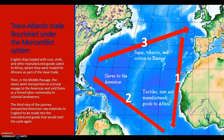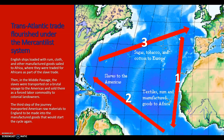Transatlantic trade flourished under the mercantilist system. English ships loaded with rum, cloth, and other manufactured goods sailed to Africa where they were traded for Africans as part of the slave trade. Then, the Middle Passage: the slaves were transported on a brutal voyage to the Americas and sold there as forced labor commodity to the colonial landlords. Third, the journey of transporting American raw materials to England to be made into manufactured goods, and the cycle would then continue.